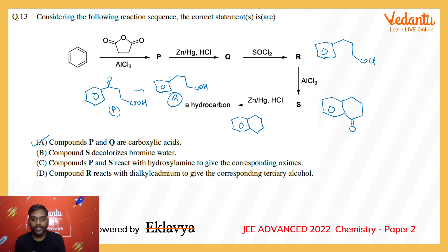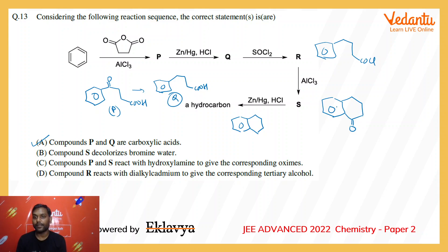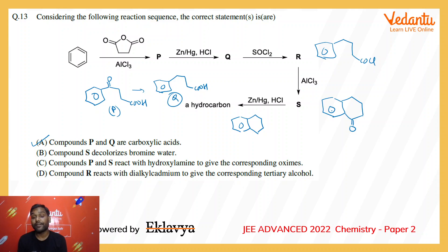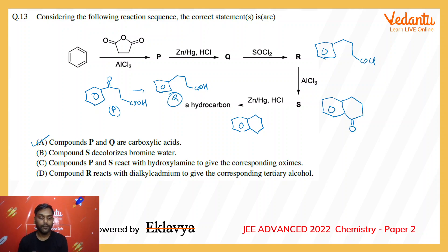Option B says compound S decolorizes bromine water. Compound S cannot decolorize bromine water, as there is no unsaturation in the compound, and the double bonds of the benzene ring cannot react with bromine water. Also, if there were an activating group like OH or NH₂, it could have reacted to form a tribromo-substituted product, but this is not possible in this compound. So option B is not correct.